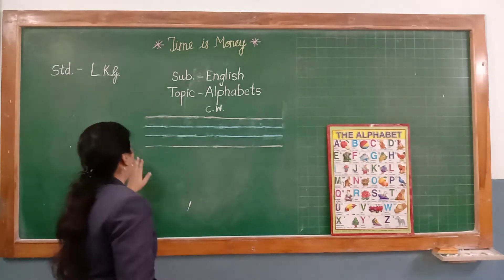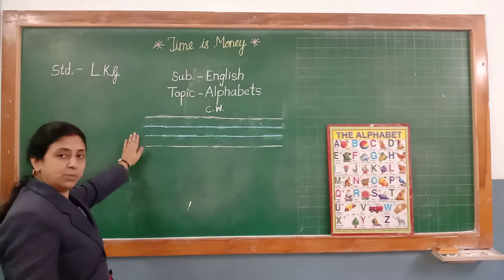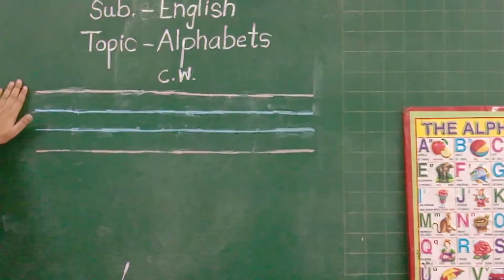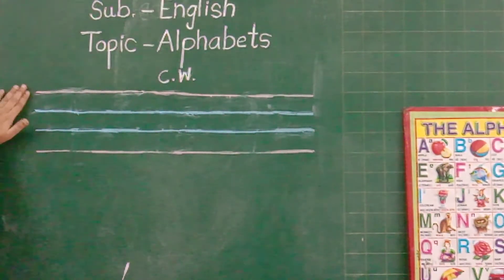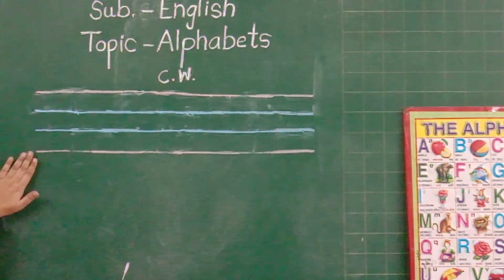Now look how to write capital P small p. In your notebook there are 4 lines. Red line, blue line, second blue line and red line.